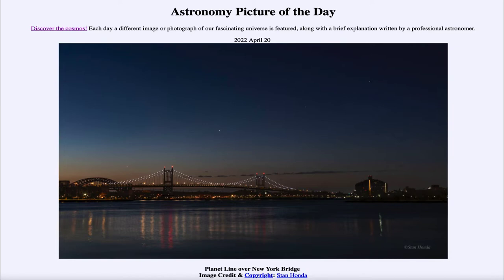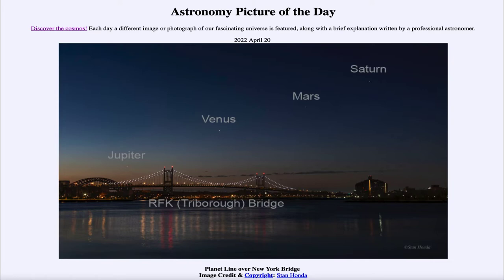Today's picture for April 20th of 2022 is titled Planet Line over New York Bridge. In the foreground, we see the RFK Triborough Bridge visible in New York City. Up above in the sky, you will see what look like stars — in fact, a line of stars going from the lower left to the upper right. They don't stand out tremendously, but we can actually label them for you, and those are not stars but actually four planets. So four of the five planets known to ancient astronomers are visible in a nice line in this one image.